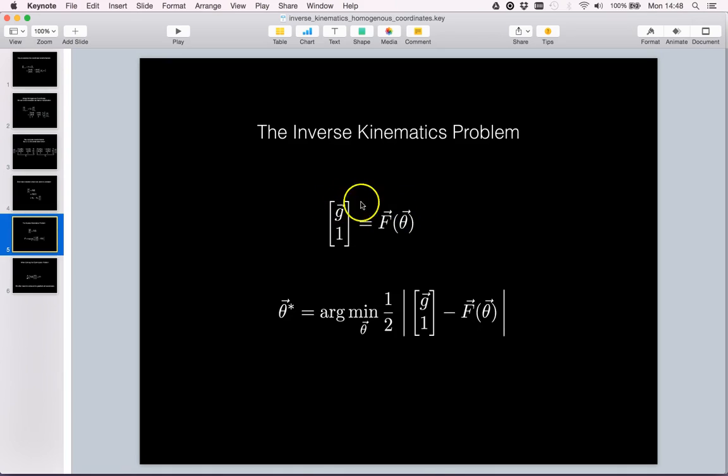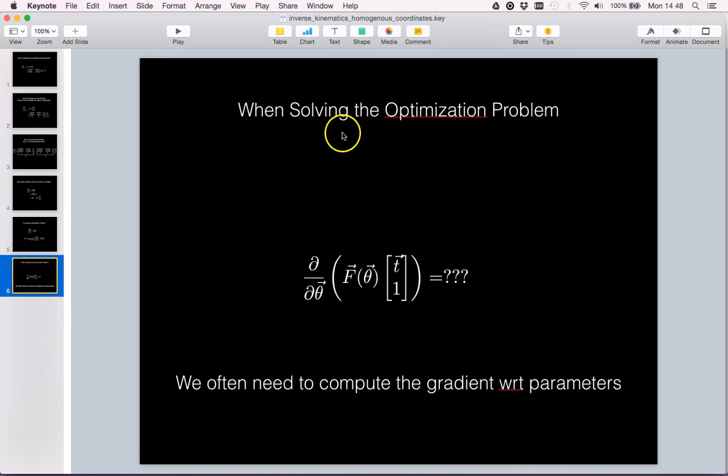This can be solved as a root search problem but is often also converted into an optimization problem, minimizing the distance between the goal and the end effector. When solving this kind of problem with optimization, we often need to find the gradient of an objective function. This implies that we need to find how the end effector position varies with respect to the theta variables, that is the partial derivative of the end effector with respect to the link angles.